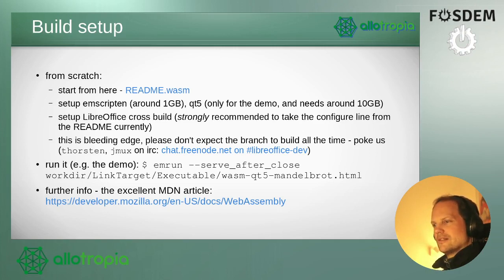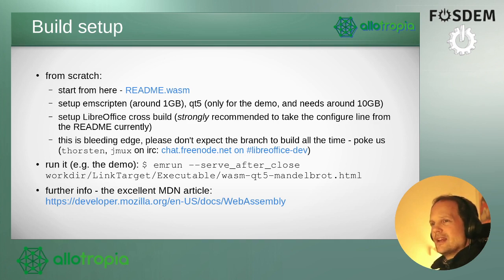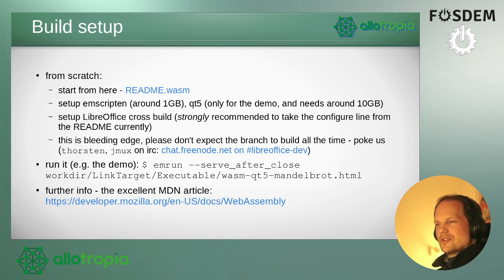Quick recap on how to build that, if you'd be a daring person — which I absolutely encourage, we can certainly use some help here. Right now it's early stages, but hopefully I'm getting most of what's still in the feature branch merged into master for LibreOffice. If you want to build it from scratch, there's a link to a README with setup instructions for both Emscripten and Qt. Size-wise, it's more than you'd need for LibreOffice itself: Emscripten weighs in about one gigabyte, you need Qt which right now is only used for the demo but might be used for more browser cross-platform support going forward — that's about 10 gigabytes — and LibreOffice itself depending on how much you build is anywhere between 15 and 30 gigabytes.